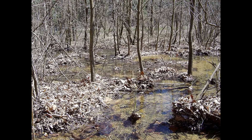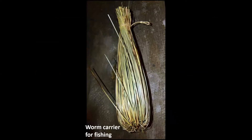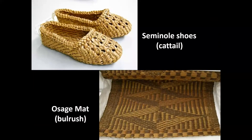People were using many of the plants growing in and near wetland areas. Here we see a beautiful hand-made basket constructed using sedge roots, bracken fern roots, willow, and red bud. Indigenous folks used the bulrushes in wetlands to make worm carriers so they could go fishing. Here we're looking at shoes made out of cattails which grow in wetland areas, and an Osage mat made using bulrushes. People used the many plants found in wetland areas not only for food but for clothing and housing.